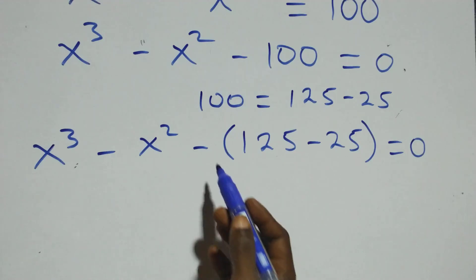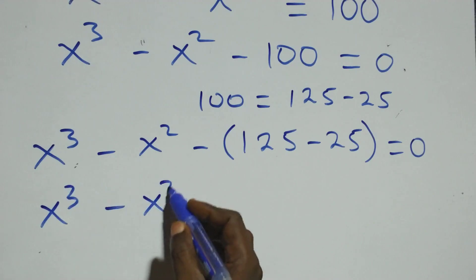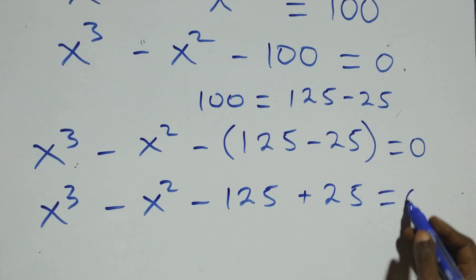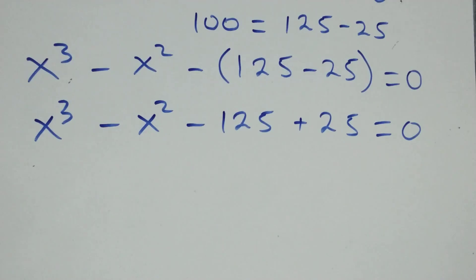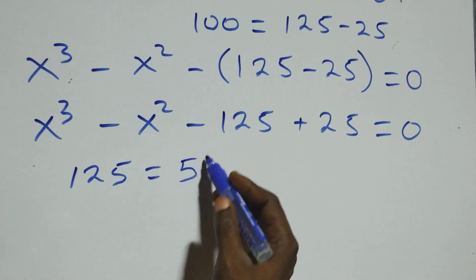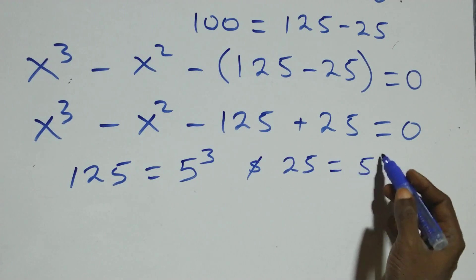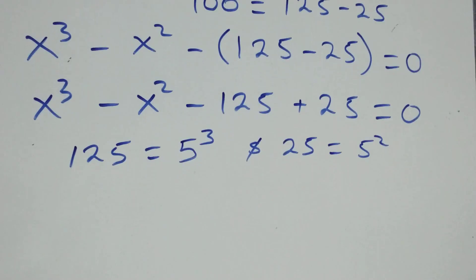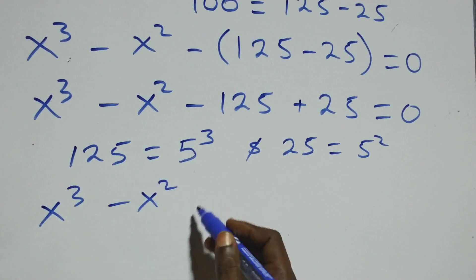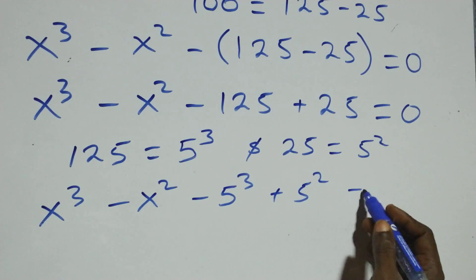Then the next step: we open this bracket, and this becomes x cubed minus x squared minus 125 plus 25 equals to zero. We can also write 125 as 5 times 5 times 5, which is 5 cubed, and 25 as 5 times 5, which is 5 squared. So this becomes x cubed minus x squared minus 5 cubed plus 5 squared equals to zero.